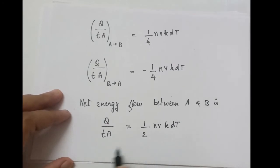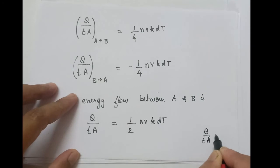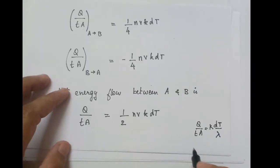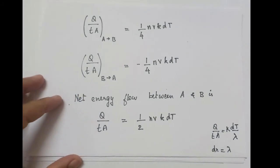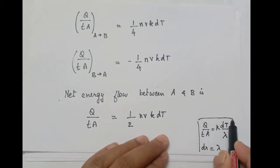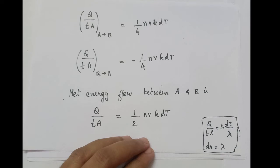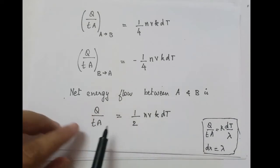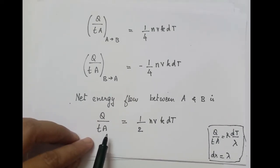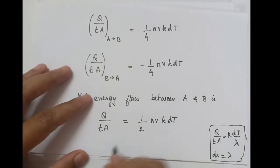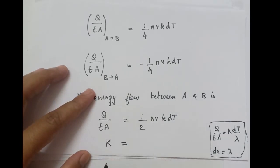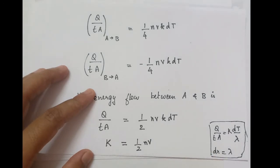Comparing this with the Fourier law of heat conduction, which states Q/TA = K·dT/dx, and noting that in our situation dx equals lambda, we compare both expressions. This is the expression for heat flow given by Fourier, and this is the expression arrived at from classical free electron theory. Comparing these, we get the expression for thermal conductivity: K = (1/2)NVk·lambda.